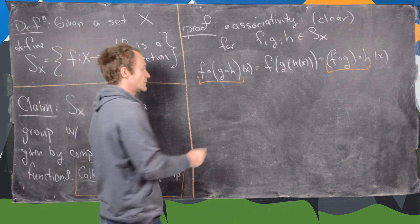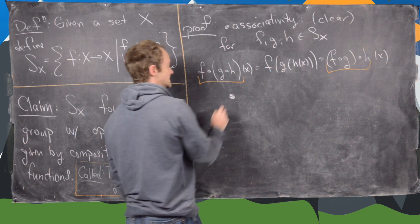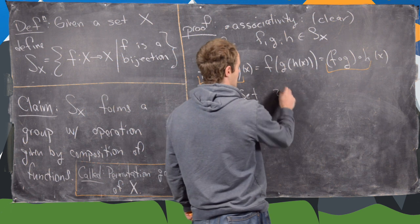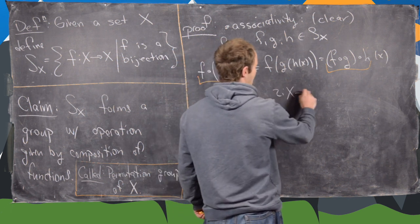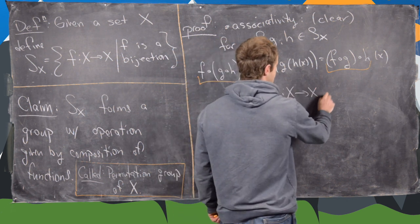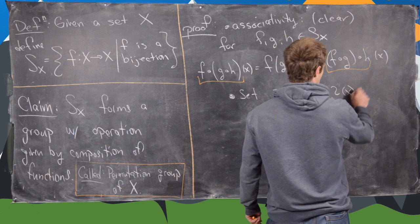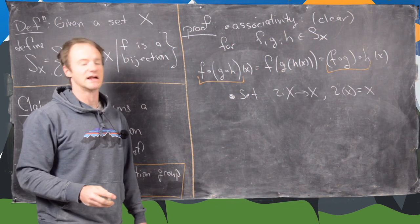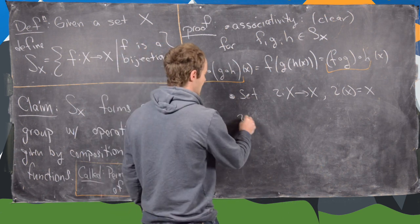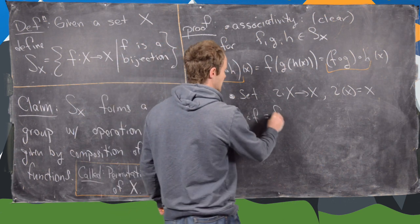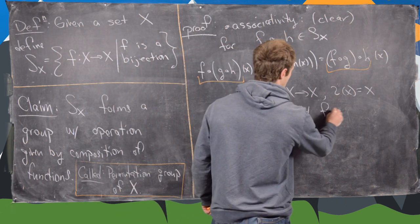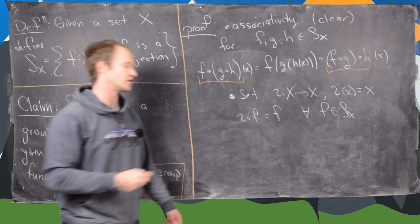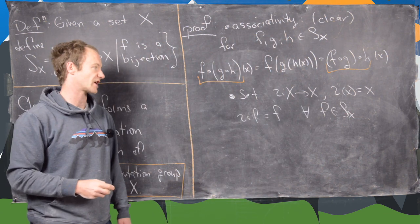Now the next thing we want to show is that there is an identity. If we set iota from x to x given by iota(x) = x, then this is clearly the identity function. Notice that iota composed with f equals f, and this holds for all f in S_x, and the composition goes the other way as well.